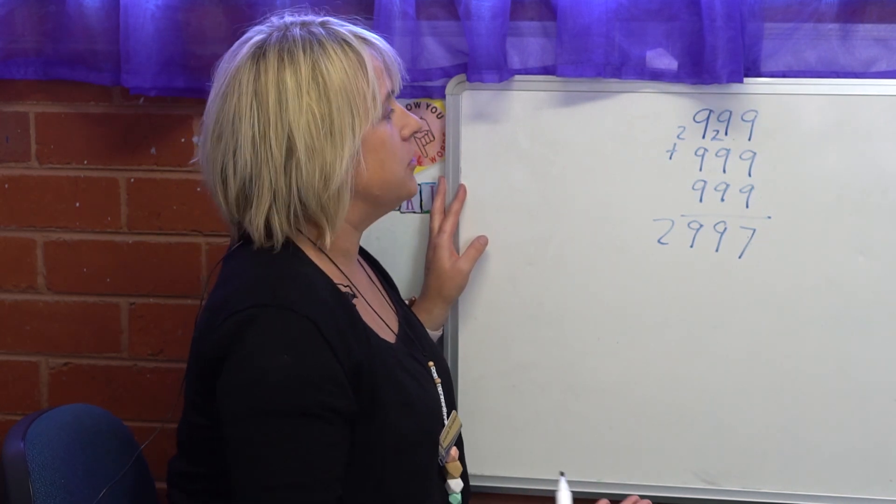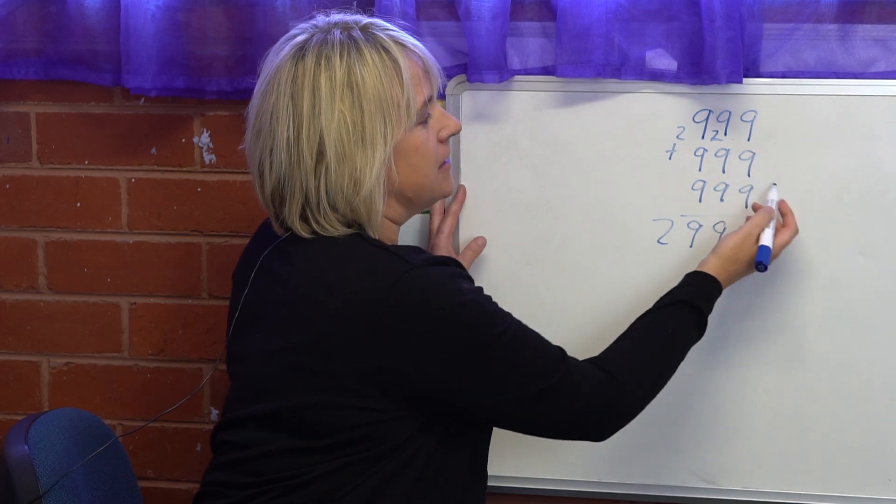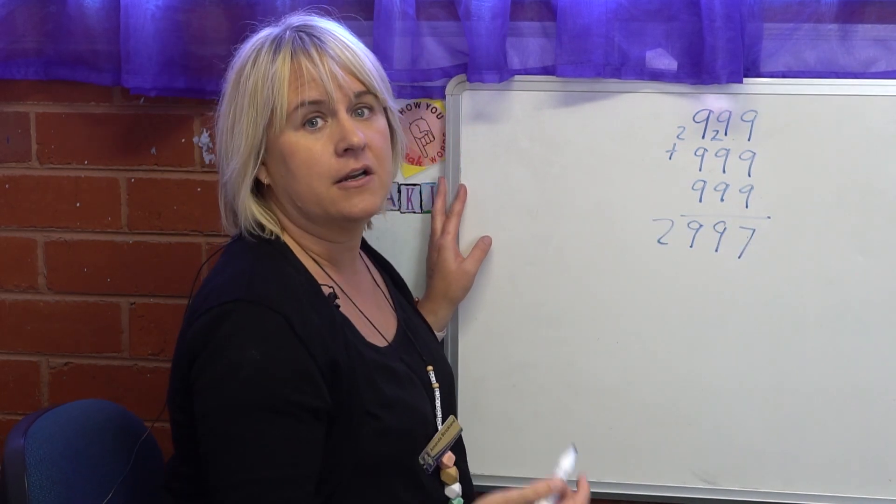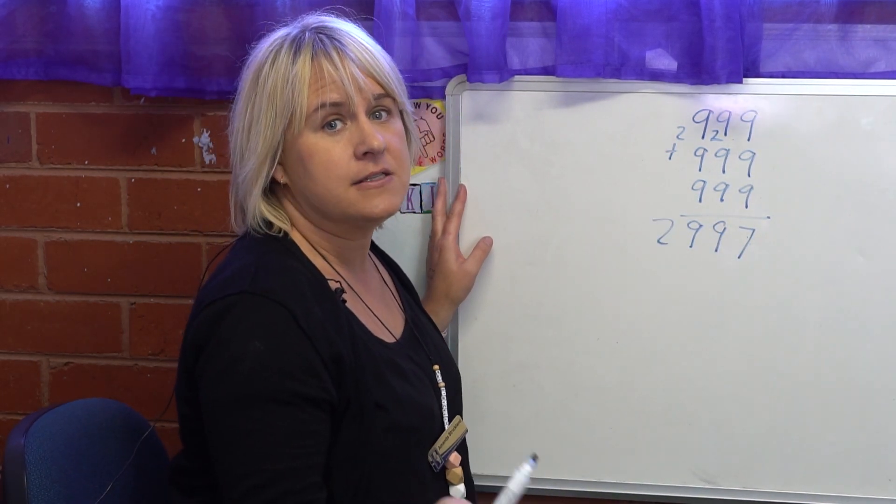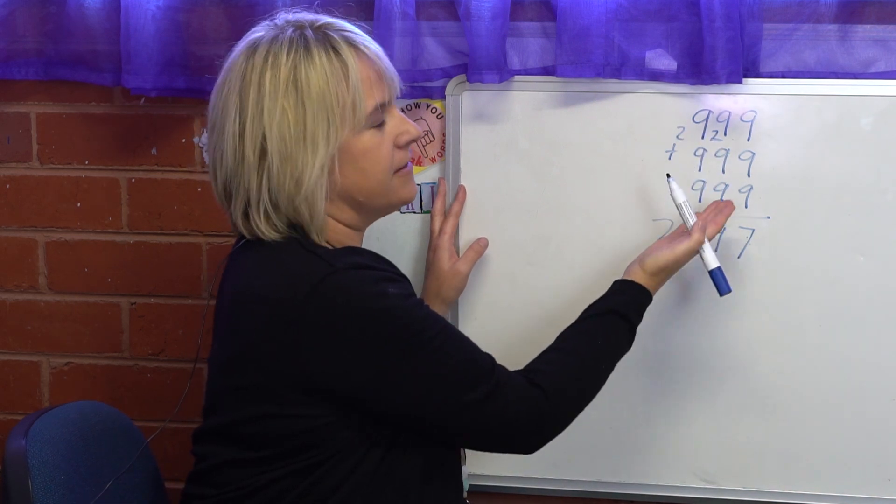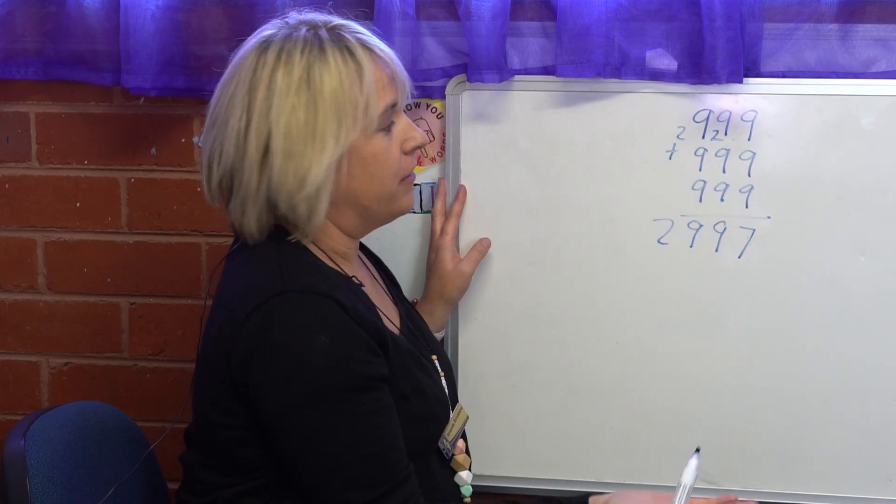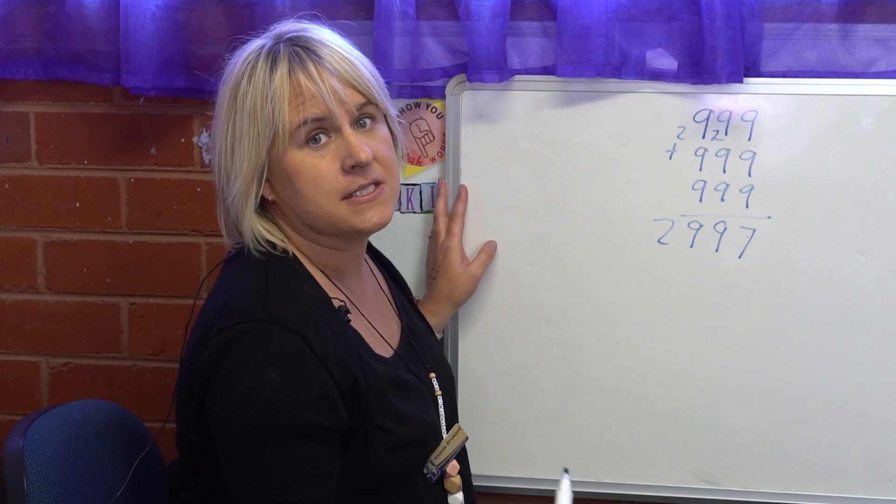Whereas if I look at these numbers differently and I use a different strategy, I would be able to look at these numbers and say 999 is only one off 1,000. I can add 1,000, 2,000, 3,000, take away my 3 and arrive at the same number mentally very easily.